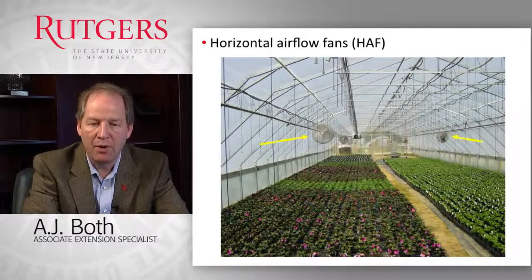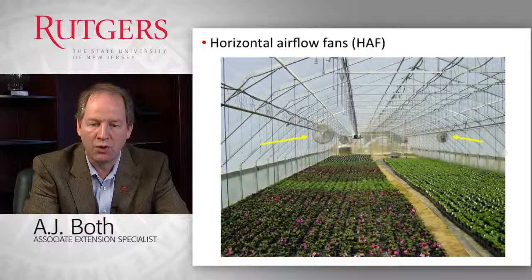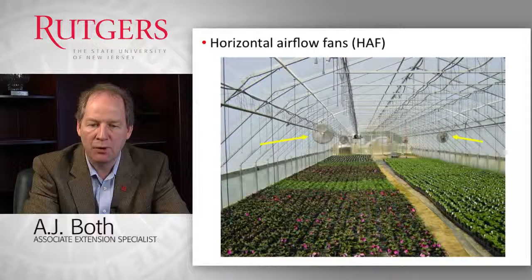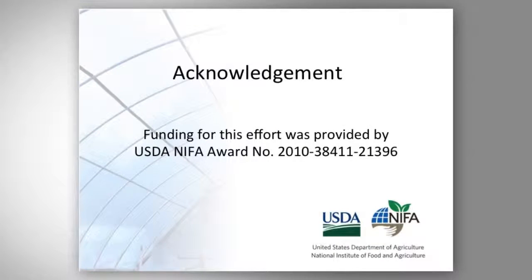Here is an example of what a horizontal airflow system looks like in a greenhouse. The fans on the left-hand side are pointing towards us so air is blowing towards us, and on the right-hand side the fans are pointing away, blowing air in the opposite direction. By running these fans continuously, you can create a racetrack pattern that provides good mixing of the air inside the greenhouse environment. We'd like to acknowledge the funding received for this effort by the USDA-NIFA program.